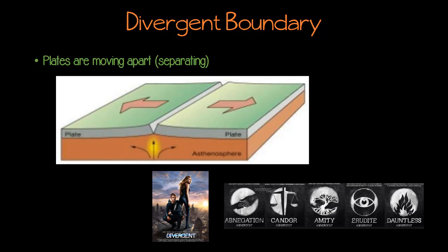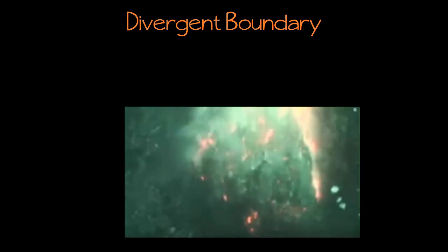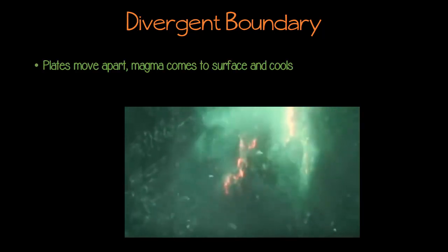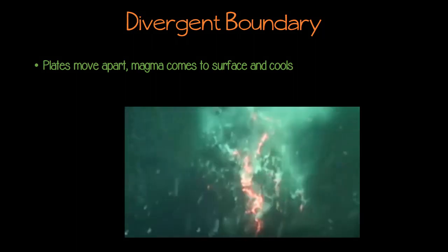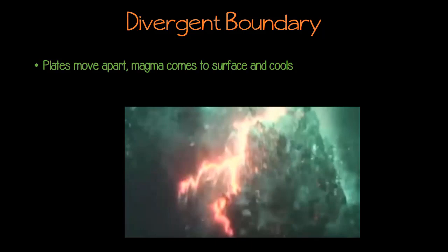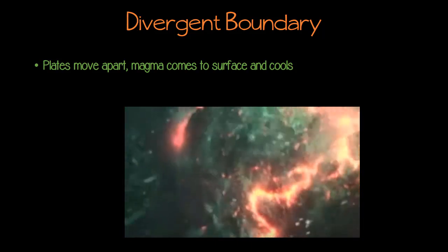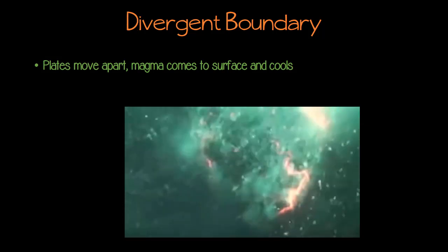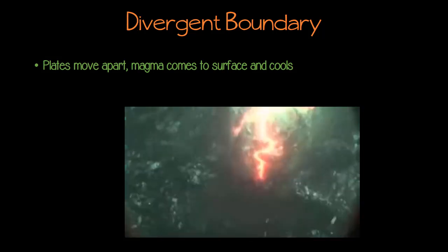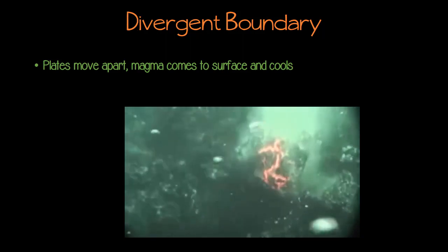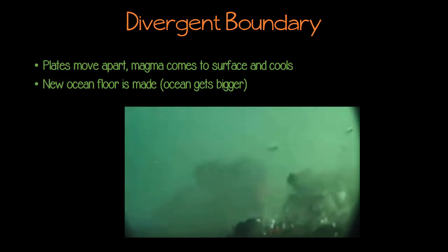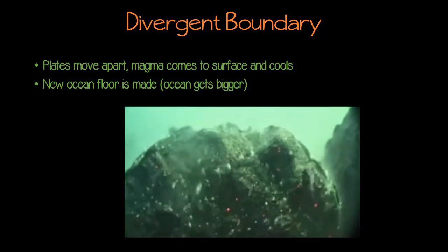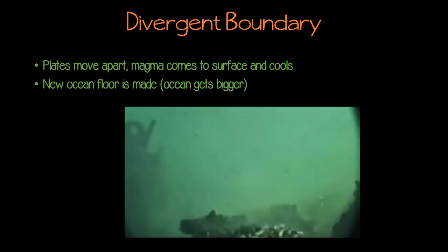So underwater, as the plates pull apart, magma under the plates can squeeze up through the cracks, and it cools really quickly because the water is very cold. So it cools quickly and becomes new rock on the ocean floor. As the plates continue to diverge and spread apart, and more and more magma comes up, the ocean floor is actually going to spread out and get bigger — the ocean's going to grow.